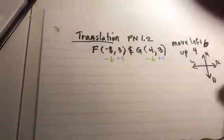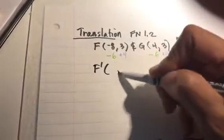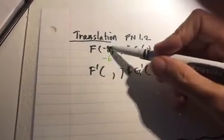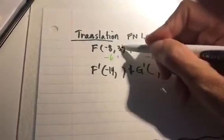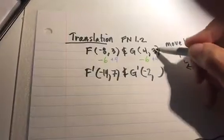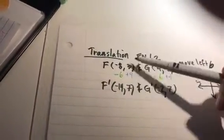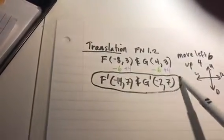Now I'm going to rewrite my coordinate. So my new coordinate F prime and G prime would be mathematically negative 8 minus 6, 3 plus 4, negative 2, and 7. I want to just double check my math make sure everything is looking good and circle my final answer.